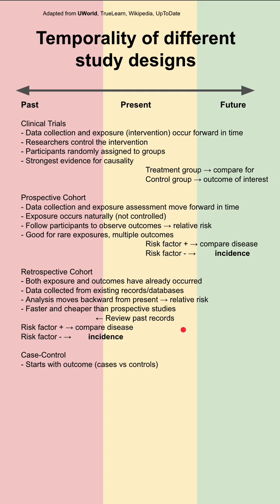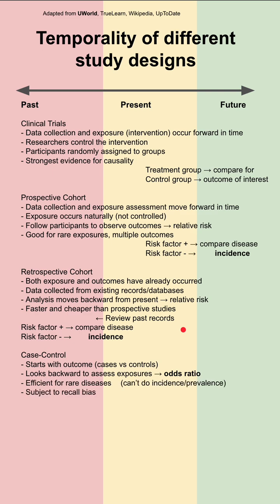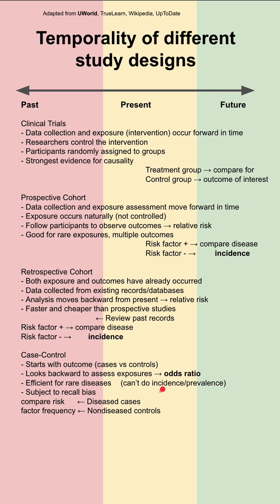The next study design is the case-control study. In this case, you start with the outcome — you have cases and controls, and you look backward to assess exposures, obtaining an odds ratio. You have diseased cases and non-diseased controls, and you're looking backwards to compare risk factor frequency. This is efficient for rare diseases, although you cannot obtain incidence or prevalence. This design is also subject to recall bias.